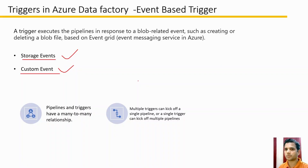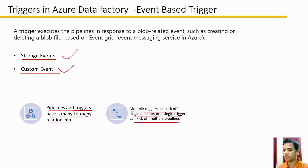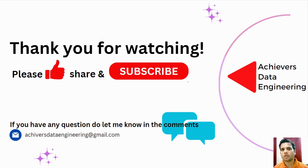A few more details on event-based triggers: pipelines and triggers also have a many-to-many relationship here, similar to schedule triggers. Multiple triggers can kick off a single pipeline or a single trigger can kick off multiple pipelines. However, unlike schedule-based triggers, event-based triggers do not provide an option to select a time zone. The key difference is that schedule-based triggers execute a pipeline at a specific time based on a time zone, while event-based triggers invoke the pipeline based on whatever event is configured. In the next video we'll discuss tumbling window triggers in detail. Thank you for watching, keep learning!